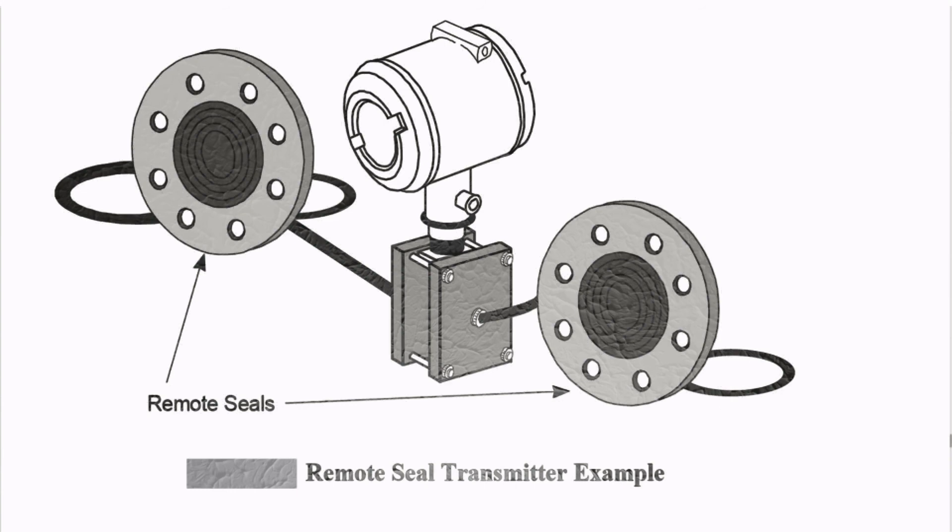Remote seal type transmitters are available for both chemical and high-viscosity fluid applications. Today we covered the different seal techniques used in pressure transmitters — chemical seal and remote seal — and the construction of both diaphragm seals and how they connect to the transmitter electronics. If you found this video useful, please hit the like button, share it with the instrumentation community, and subscribe to our channel, Learning Instrumentation Engineering. Thank you.